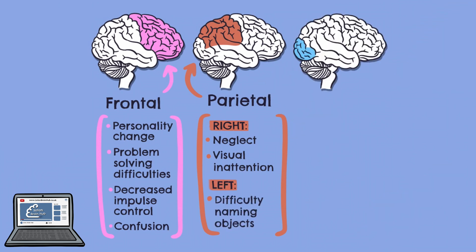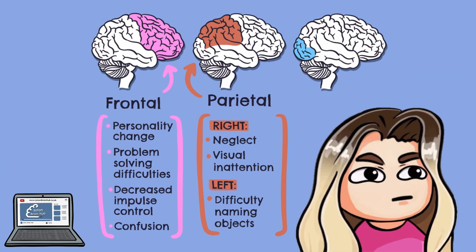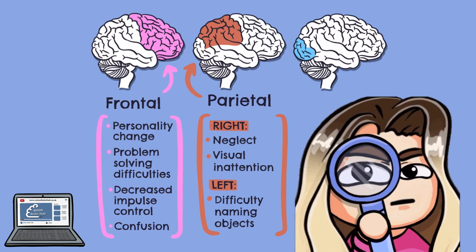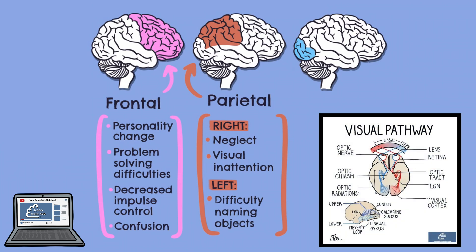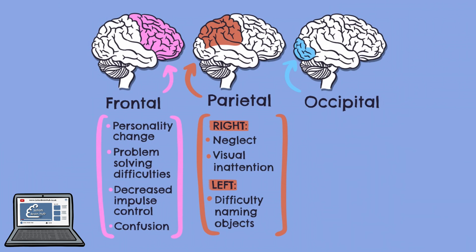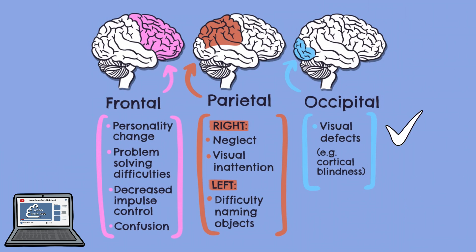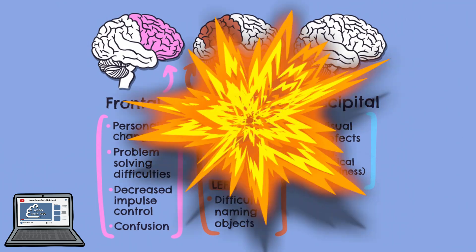The occipital lobes, located in the rear portion of the cerebral cortex, are primarily responsible for visual functions. This is the part of the brain where visual information is processed. As such, the symptoms of occipital lobe damage include various visual defects and other issues related to perception. One of the more severe complications is called cortical blindness, where there is partial or total loss of vision in an otherwise normal appearing eye, due to occipital lobe injury.